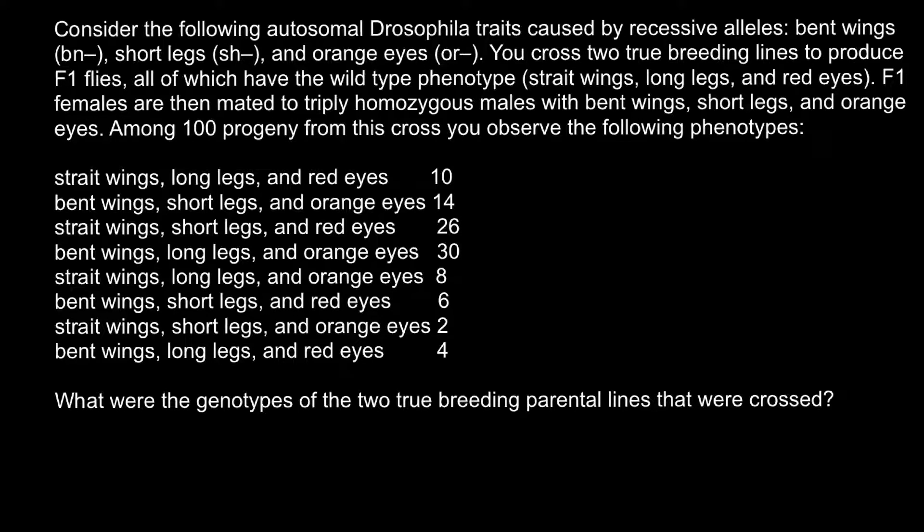Hello and welcome to Nikolai's genetics lessons. Today's problem: consider the following autosomal Drosophila traits caused by recessive alleles — bent wings, short legs, and orange eyes. You cross two true breeding lines to produce F1 flies, all of which have the wild type phenotype: straight wings, long legs, and red eyes. F1 females are then mated to truly homozygous males with bent wings, short legs, and orange eyes. Among 100 progeny from this cross you observe the following phenotypes. The question is: what are the genotypes of the two true breeding parental lines that were crossed?